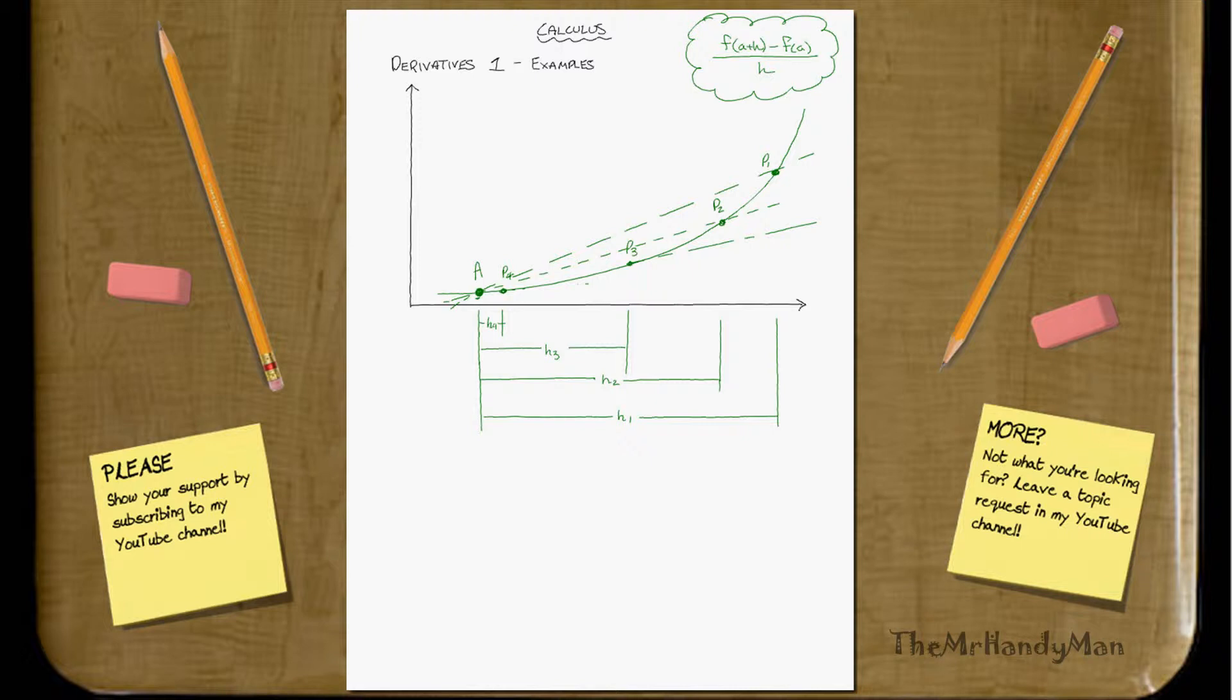And then finally 4, which is the closest, and I'm going to just make this one tiny little dashes. Now notice that this is the closest to ideal.